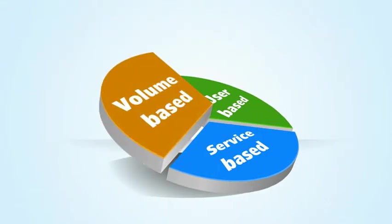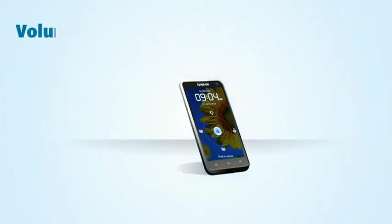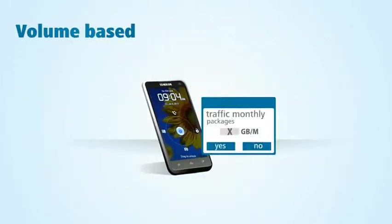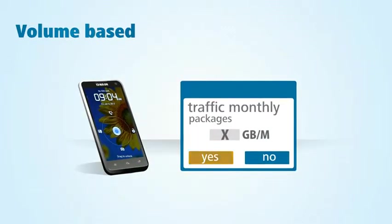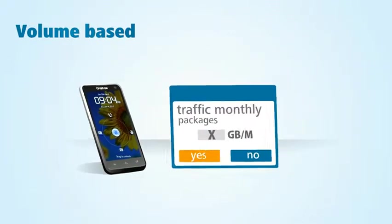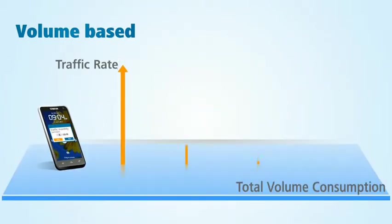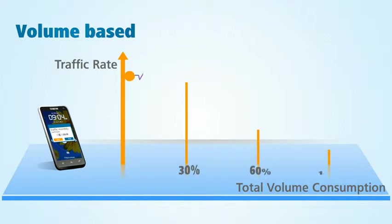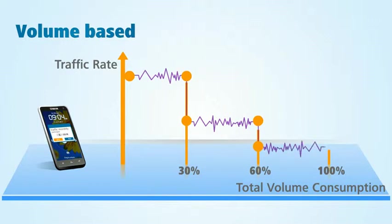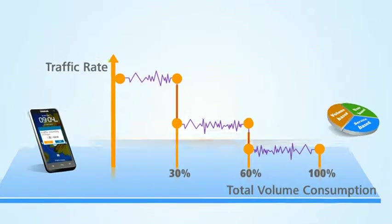In the volume-based bandwidth management, data rate is dependent on total volume consumed. Carriers could define several thresholds for traffic volume and bind different data rates for each threshold. The more volume consumed, the lower the rate becomes.